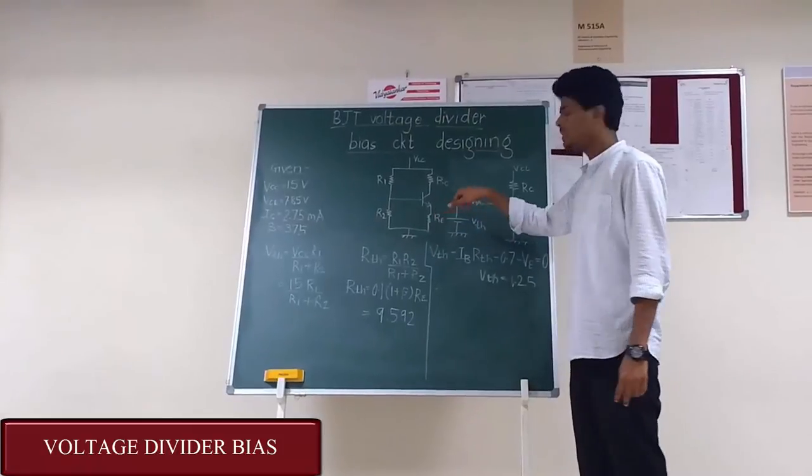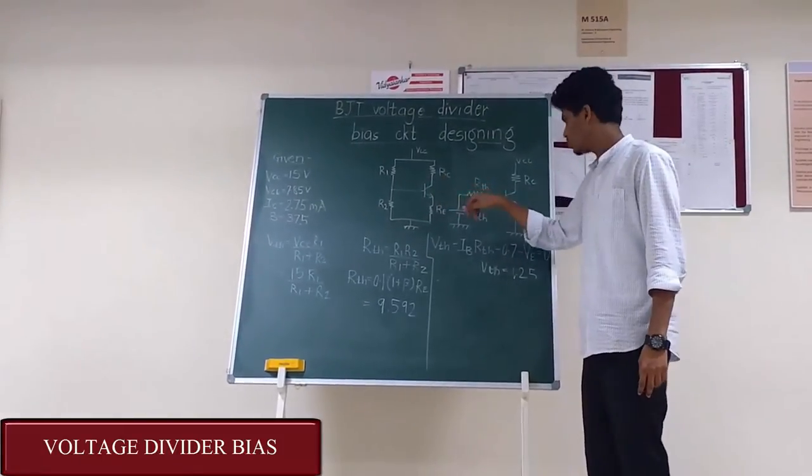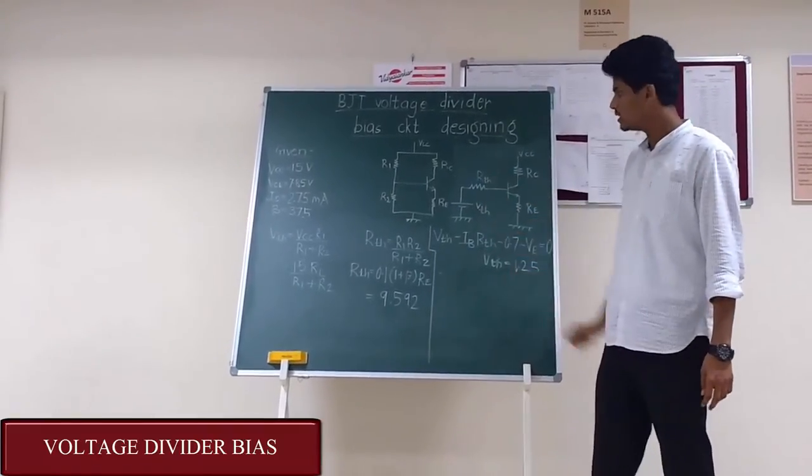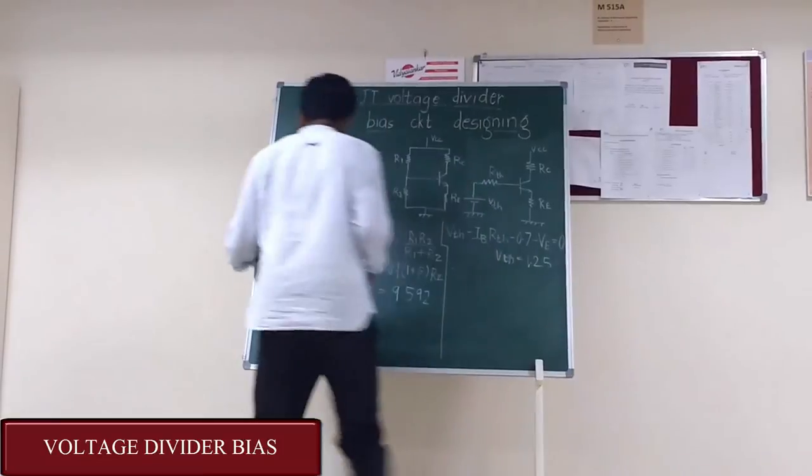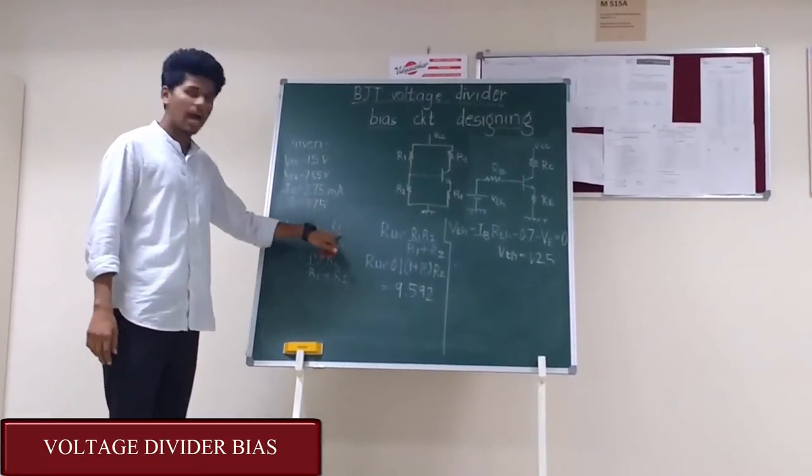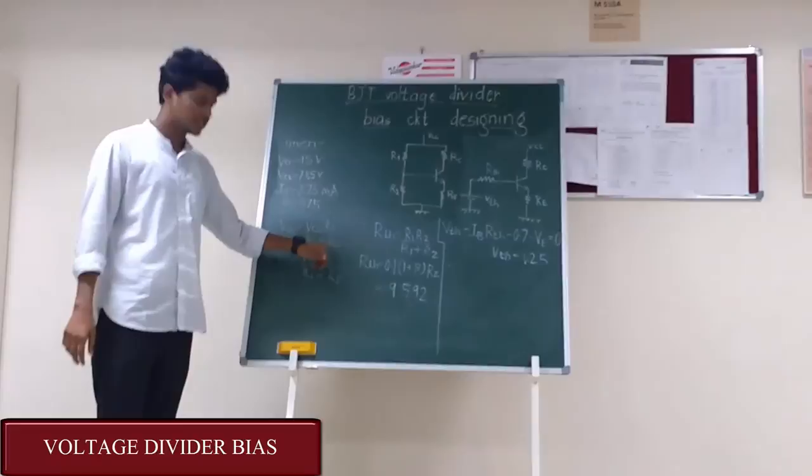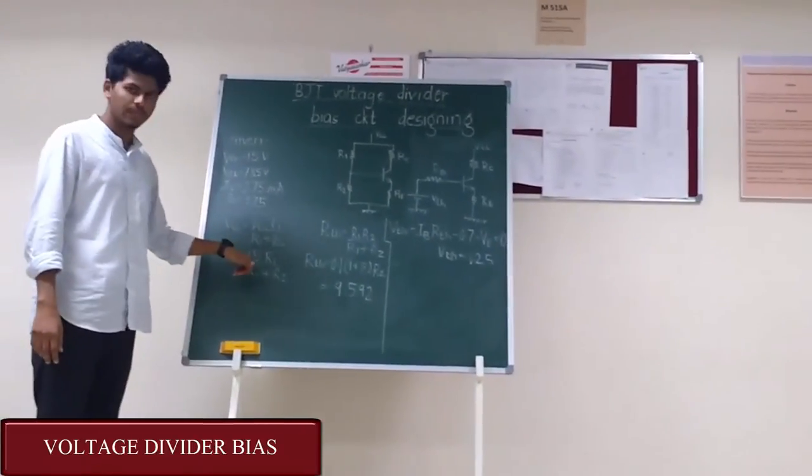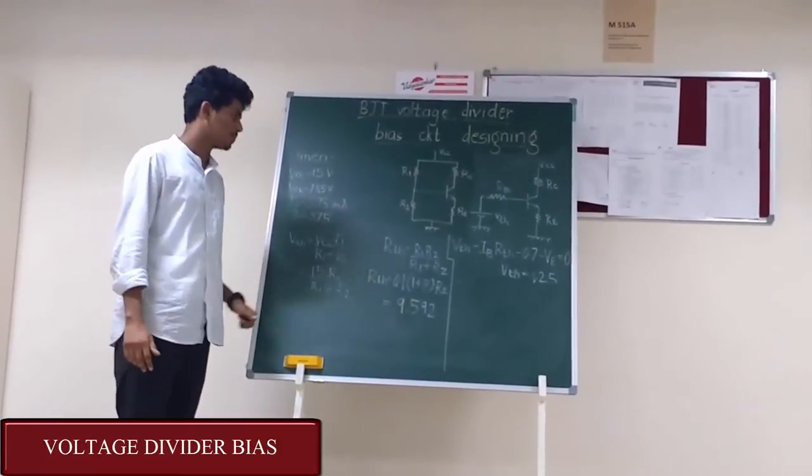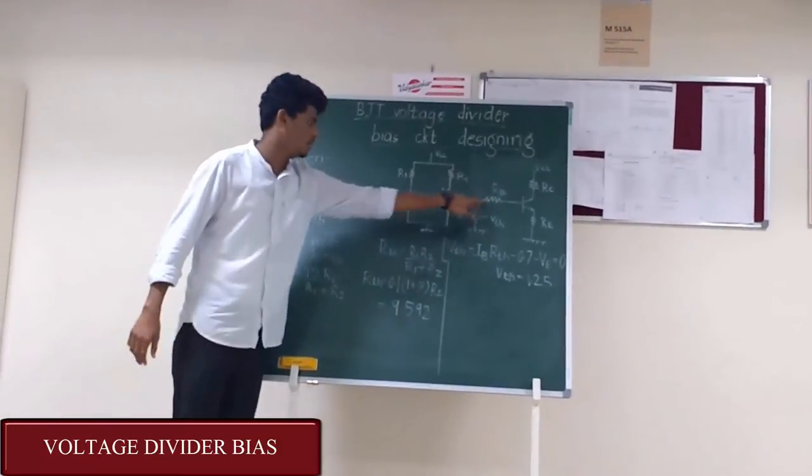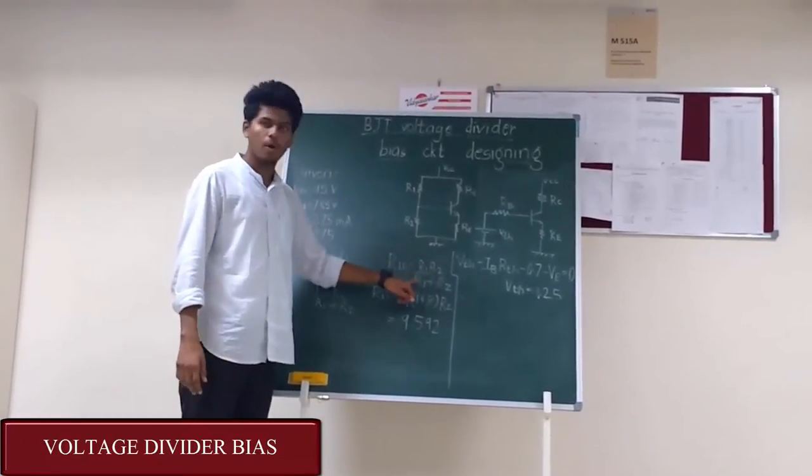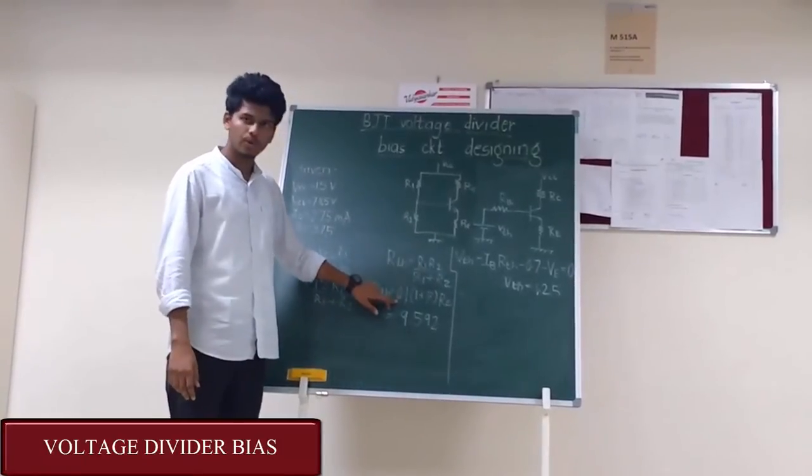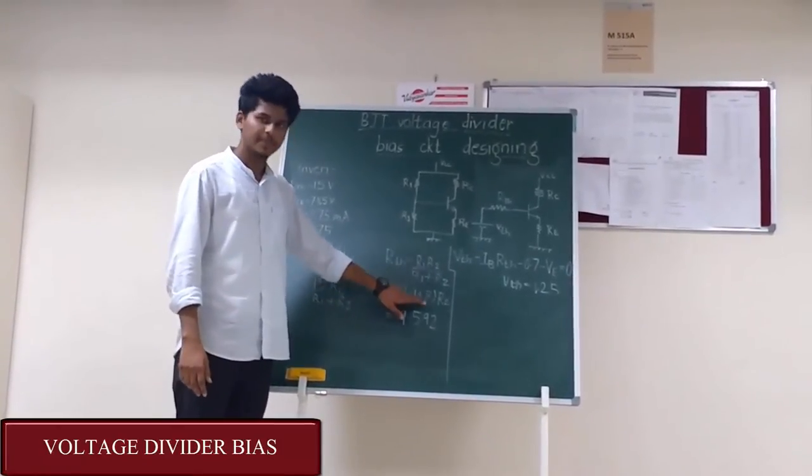Here the equivalent circuit of voltage divider bias is drawn. Let us calculate the Thevenin's voltage and Thevenin's resistance. We know that Thevenin's voltage is given by VTH = VCC*R1/(R1+R2). VCC applied is 15 volts, so VTH = 15*R1/(R1+R2). Whereas RTH = R1*R2/(R1+R2). We know that RTH = 0.1*(1+beta)*RE, so that comes out to be 9.592 ohms.